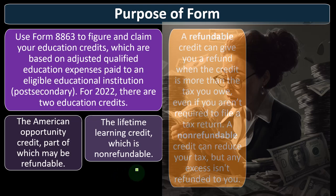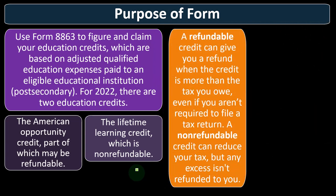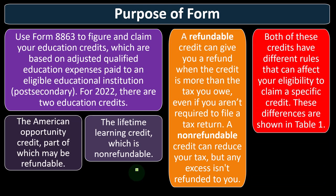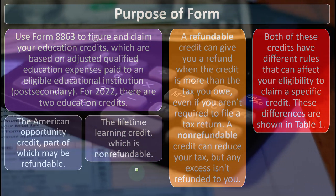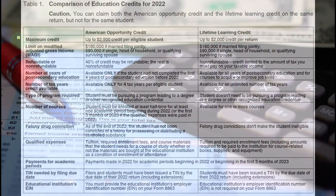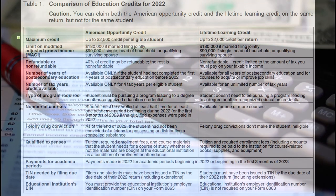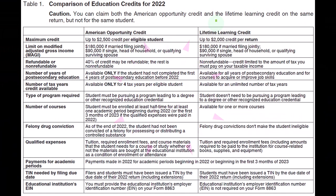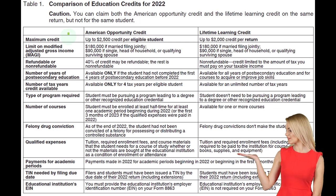A refundable credit can give you a refund when the credit is more than the tax you owe, even if you aren't required to file a tax return. A non-refundable credit can reduce your tax, but any excess isn't refunded to you. Both credits have different rules that can affect your eligibility to claim a specific credit, shown in Table 1. The general thought process: try first for the American Opportunity Credit, then Lifetime Learning.